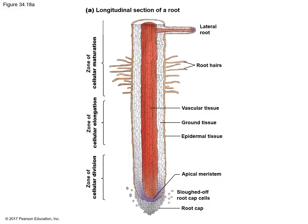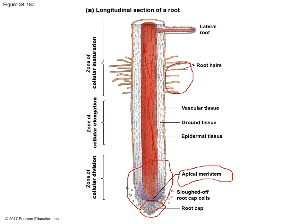Here we can see a longitudinal section of a root. At the bottom we can see the apical meristem, and this is the root cap with cells protecting the apical meristem — all found in the zone of cellular division, where growth is beginning. As the root reaches down into the soil, we start seeing the zone of cellular elongation, where vascular tissues, ground tissue, and epidermal tissue start to form. As the root continues to reach down, we move into the zone of maturation, where root hairs start to be produced to absorb water and nutrients, and lateral roots may also form.